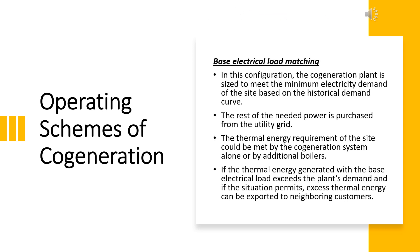The first scheme is base electrical load matching. The co-generation plant meets the minimum electricity demand. If we have a minimum demand, the maximum demand is met by the utility grid. Thermal energy from the co-generation system and additional boilers is generated with the minimum electrical load. Excess thermal energy can be exported to neighboring customers.